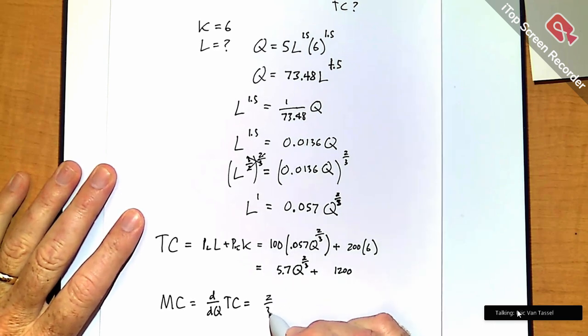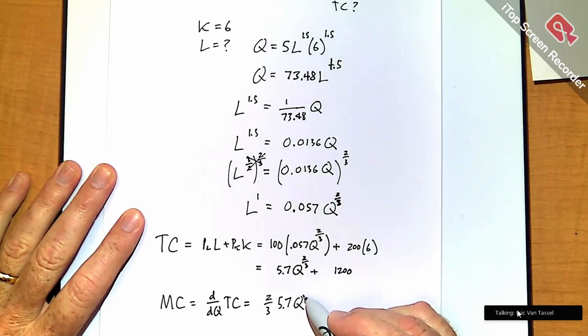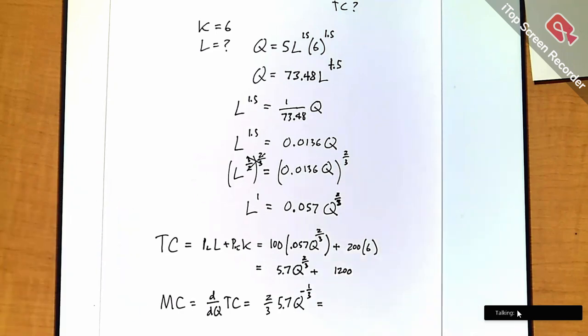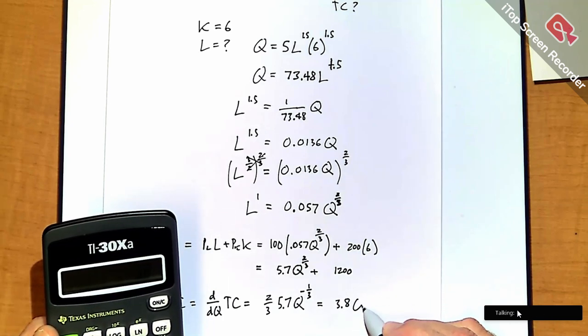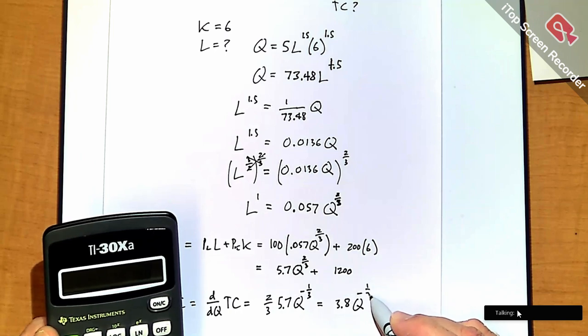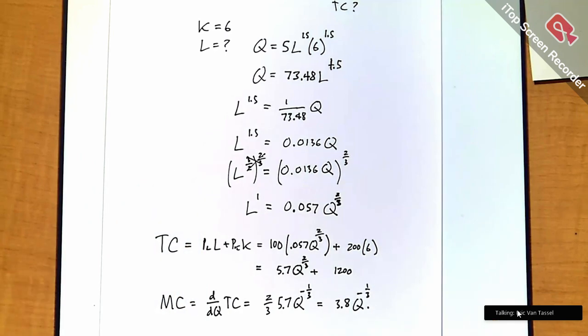So you have 2/3 times 5.7 times Q to the 2/3 minus 1, which is minus 1/3. So 5.7 times 2/3 is 3.8. Something like that. So we have the derivative of total cost. Perfect.